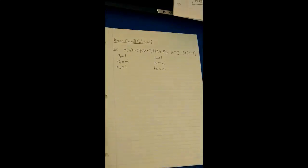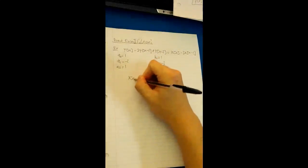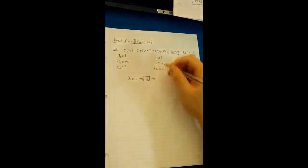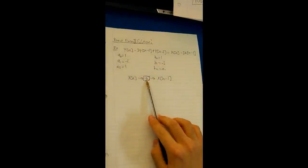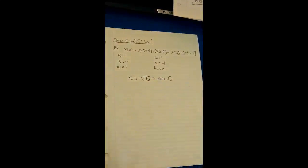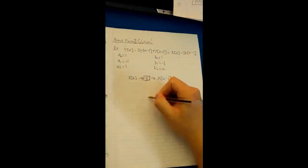Using these, we're now going to use the direct form solution. If you remember, anytime we see a delay, we can write a delay box as d. So if x of n goes into a delay system d, what comes out is x of n minus 1. For each delay box that we go through, we have a delay by 1. Since the order of the system is 2, there are going to be two delay boxes.